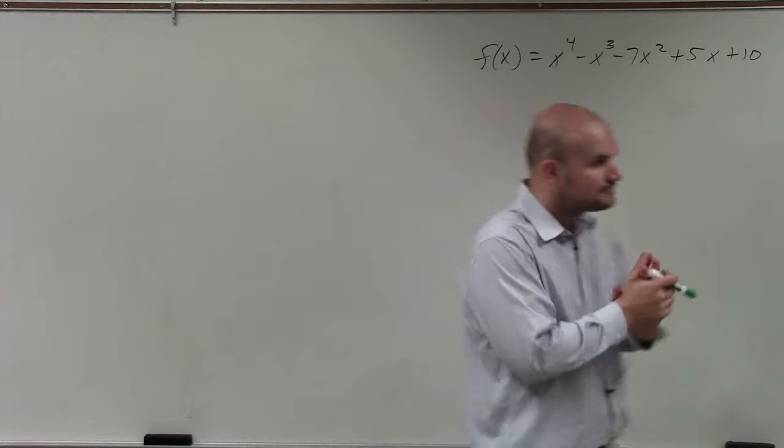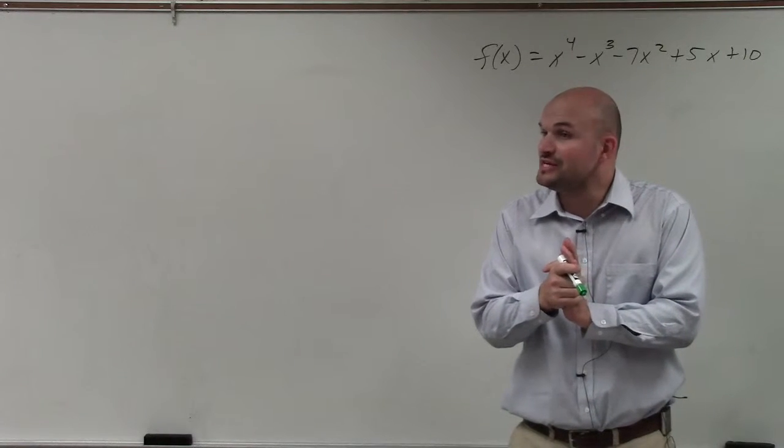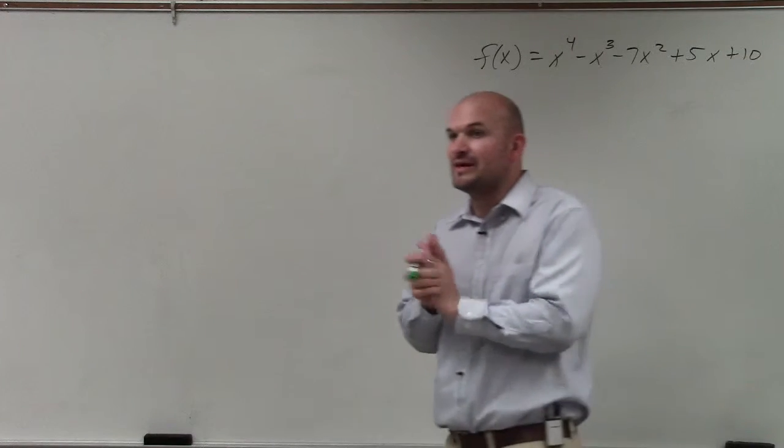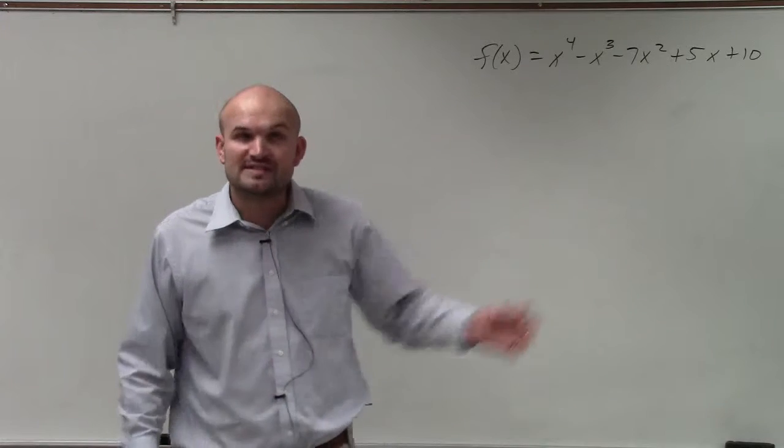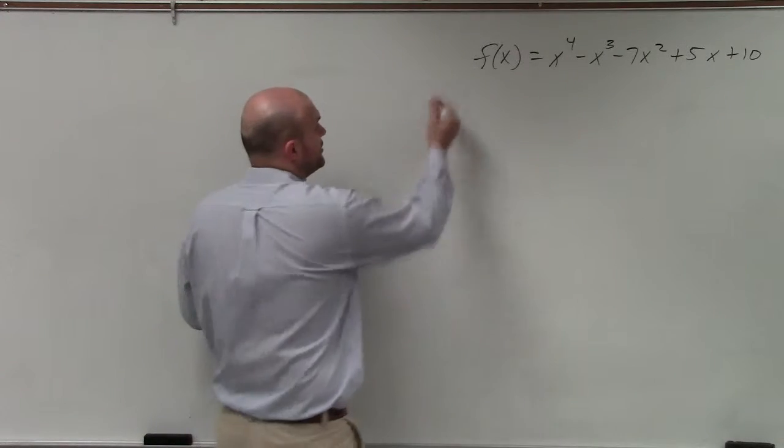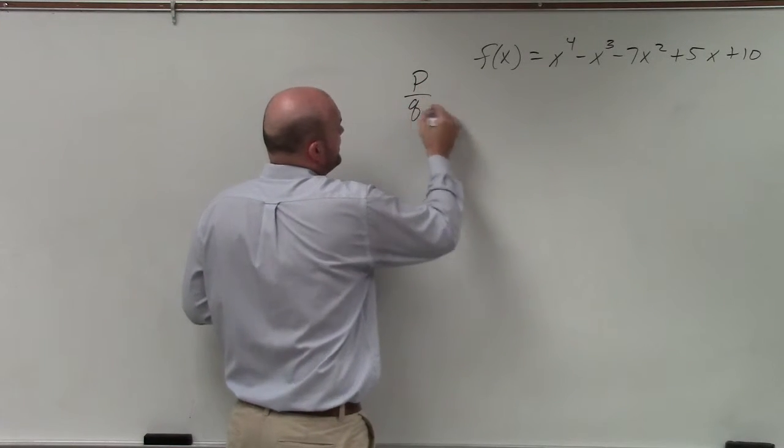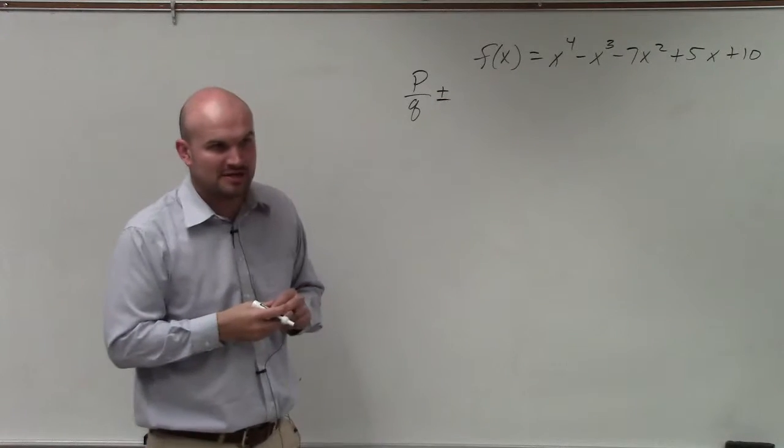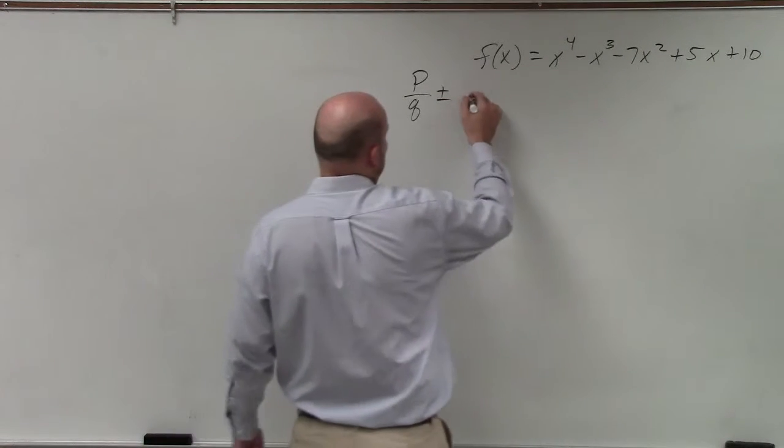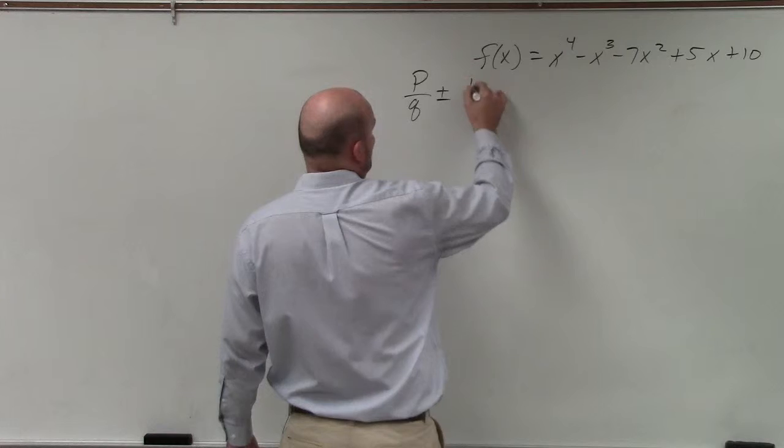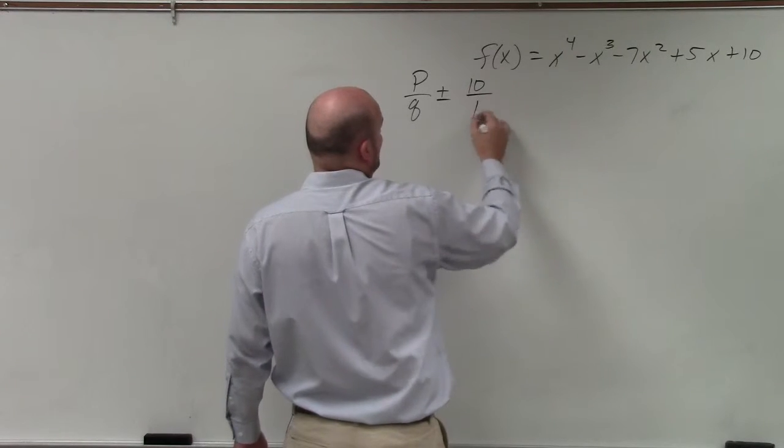All right. So ladies and gentlemen, the rational zero test. First thing that you need to do for a problem like this, I asked you to find all of the zeros. So the first thing we're going to do is do p over q. This is, again, going to tell us all the possible rational zeros. You're basically taking the factors, plus or minus, of 10 over 1.